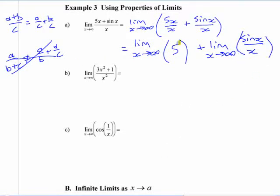What's the limit of five as you approach infinity? It's five. It's always five. If the function is always five, no matter how close to infinity you get, it's always five. And this one was zero, so it's five.